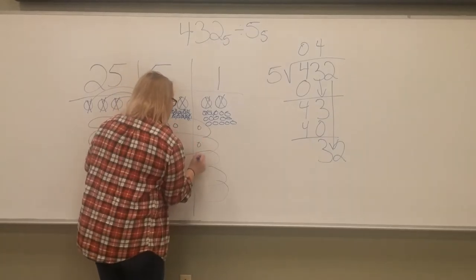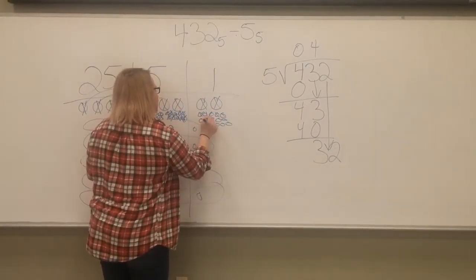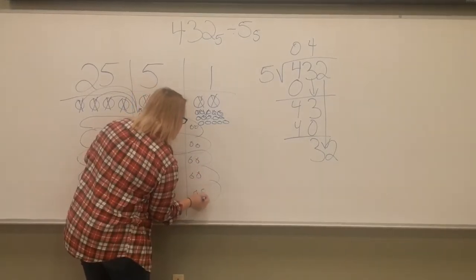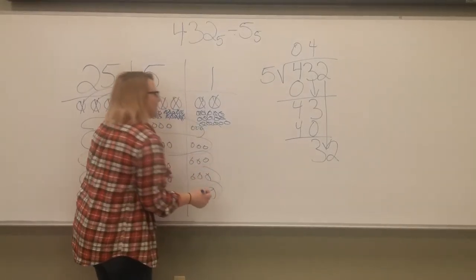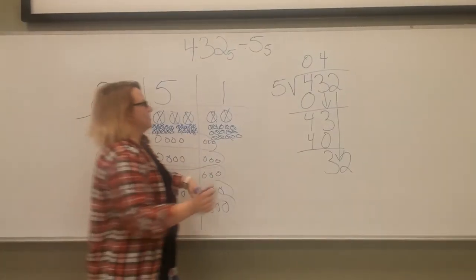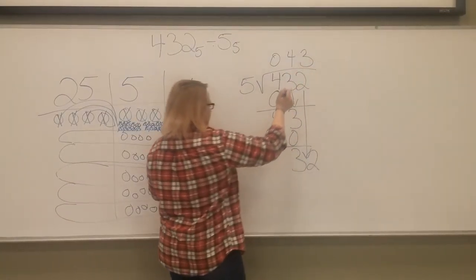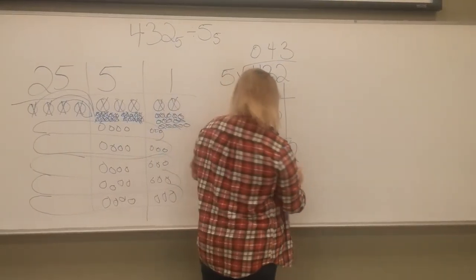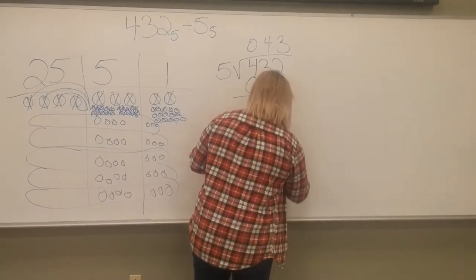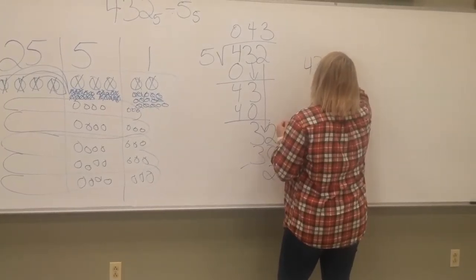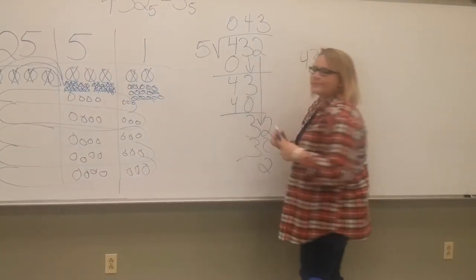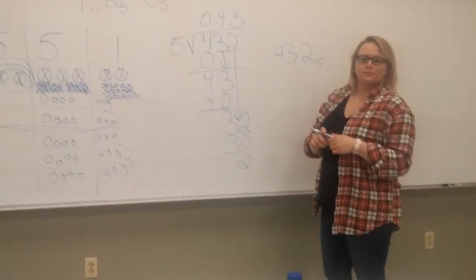Then you brought them down, so you have 3 groups, and you can share them again. Each of them got 3 again — 3 groups of 1 — so that's 3 groups shared. So the answer is 4, 3, 2 base 5.